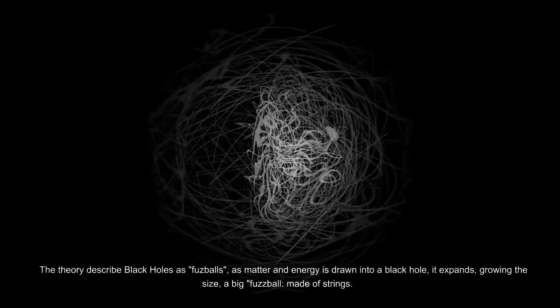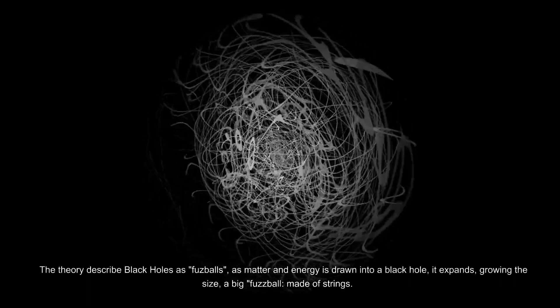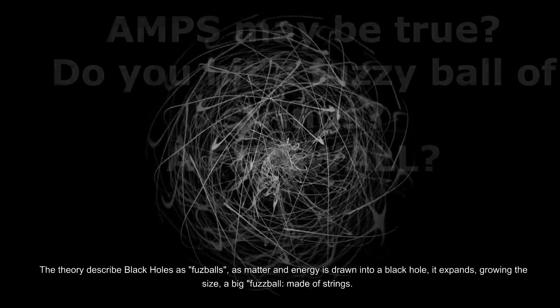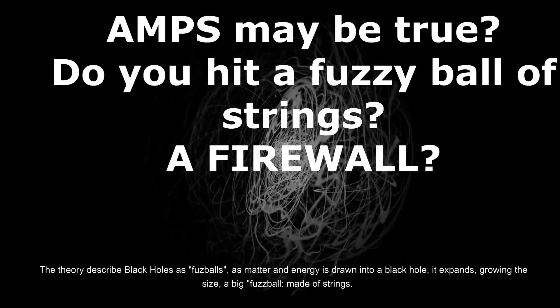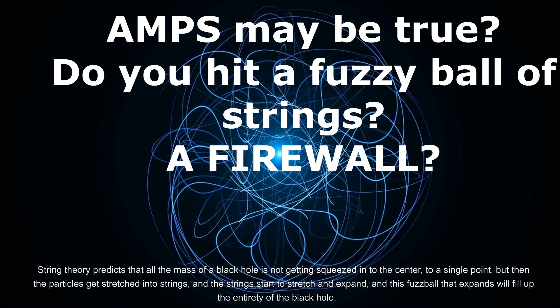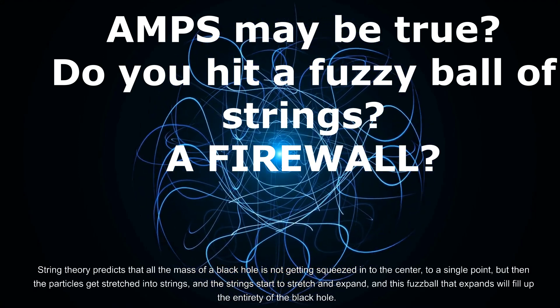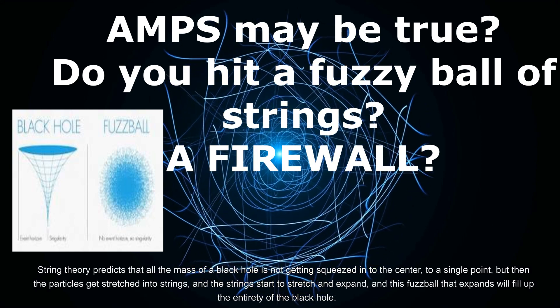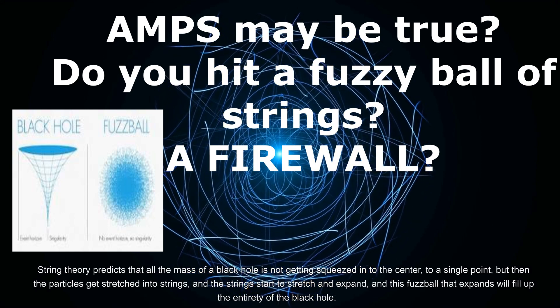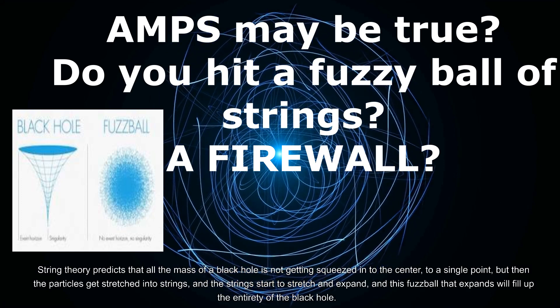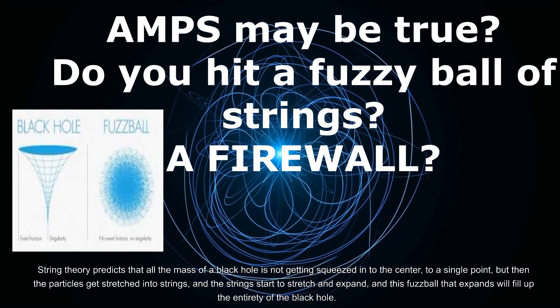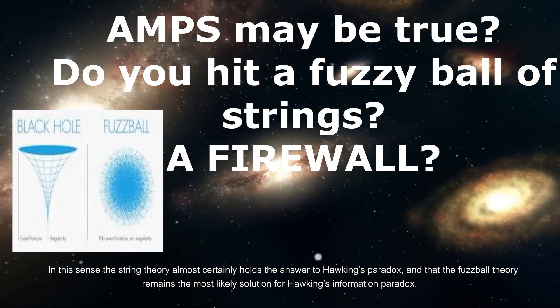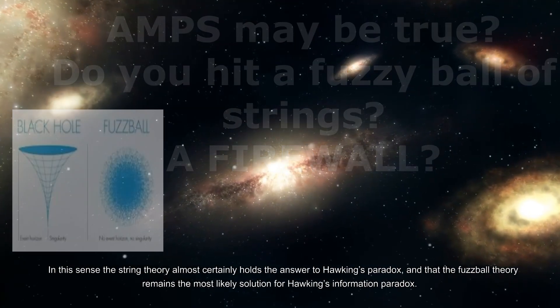The theory described black holes as fuzzballs. As matter and energy is drawn into a black hole, it expands, growing in size—a big fuzzball made of strings. String theory predicts that all the mass of a black hole is not getting squeezed into the center to a single point, but then the particles get stretched into strings, and the strings start to stretch and expand. And this fuzzball that expands will fill up the entirety of the black hole.